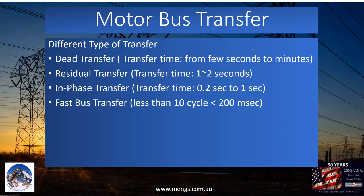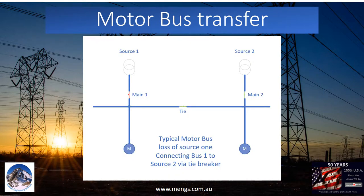Depending on transfer time, we can have four types of transfer. Dead transfer: the transfer time is about a few seconds to minutes. Residual transfer: the transfer time is about 1 to 2 seconds. In-phase transfer: the transfer time is about 200 milliseconds to 1 second. Fast transfer: the transfer time is less than 10 cycles, or 200 milliseconds for a 50 Hz system. Depending on type of transfer, closing the tie breaker can happen in a few cycles for fast transfer, to a few minutes for dead transfer.